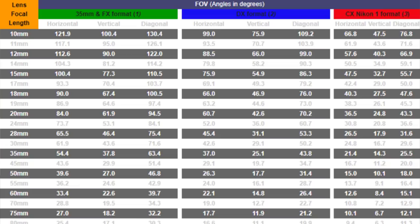On the Mate 20 Pro and the LG V40, the wide-angle camera has a focal length of just 16mm, giving a very wide field of view of 106 degrees. Note that 16mm here is a 35mm equivalent focal length — that's an entirely different topic that would take another 5 to 10 minutes to explain.